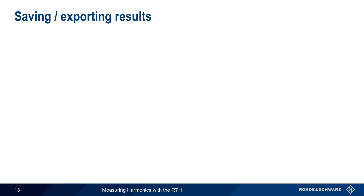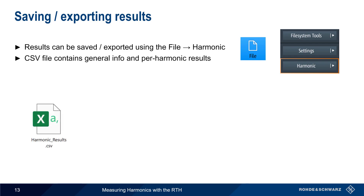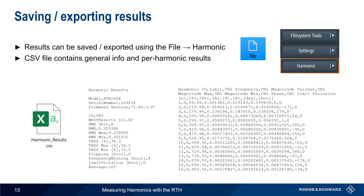In addition to providing a real-time display of the harmonics, the RTH can also save or export these values to a file using the File Harmonic menu items. The resulting CSV, or comma-separated value file, contains both general information about the instrument, settings, and overall measurement results, as well as detailed results for each individually measured harmonic. These results can be transferred from the RTH using either a USB drive, or over the RTH's Wi-Fi or LAN-based interfaces.